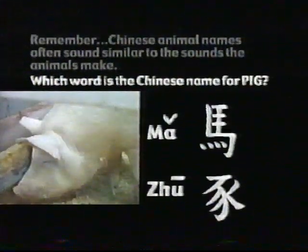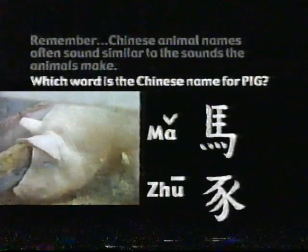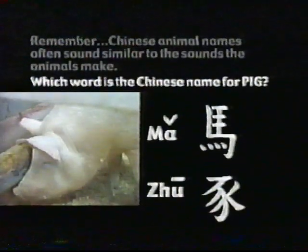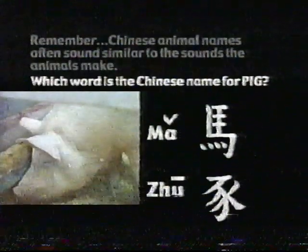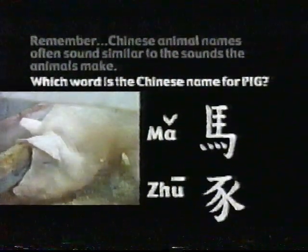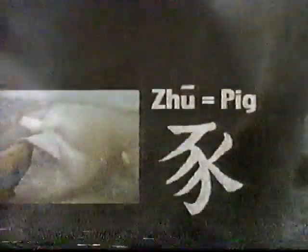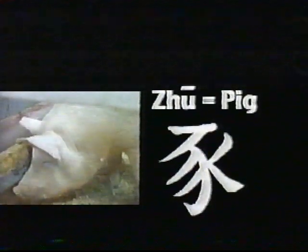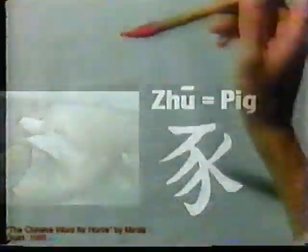Which of these words is the Chinese name for a pig? Ma? Or zhu? A Chinese pig is called zhu. Not only do Chinese animal names sound like the sounds the animals make.